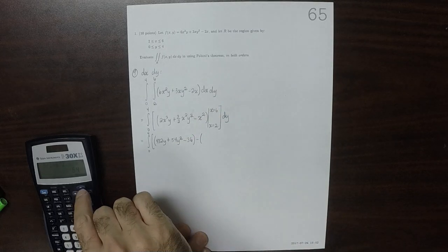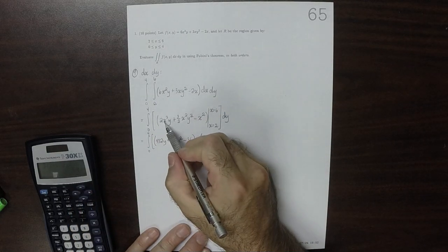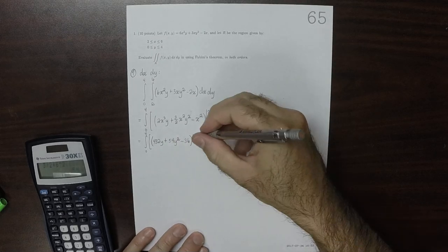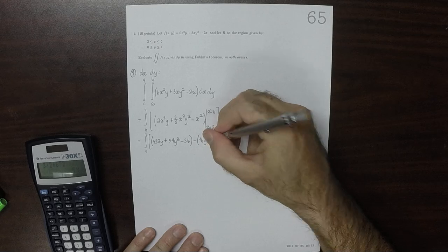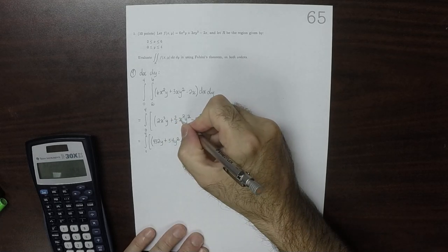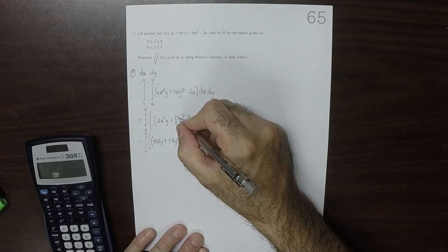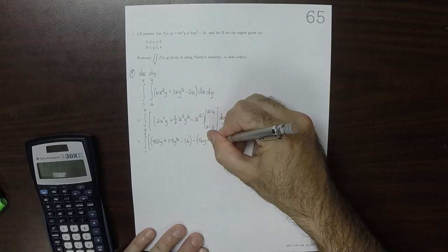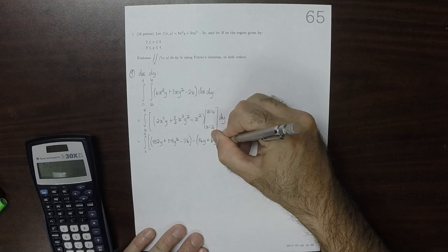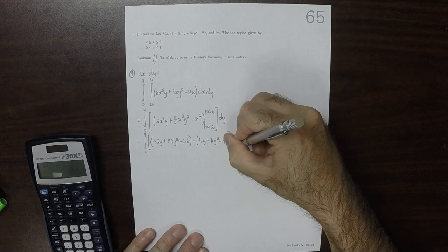Minus now all that plugging in 2. So 2 cubed is 8 times 2 is 16, so 16y, plus 4 times 3 halves, so 4 times 3 is 12 over 2 is 6, so 6y squared, and then minus 4, dy.